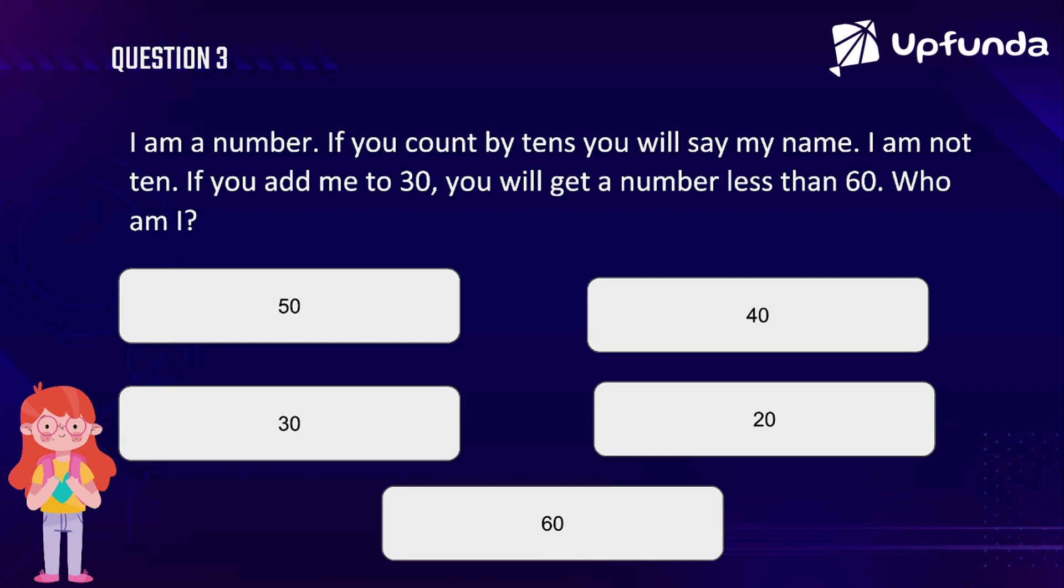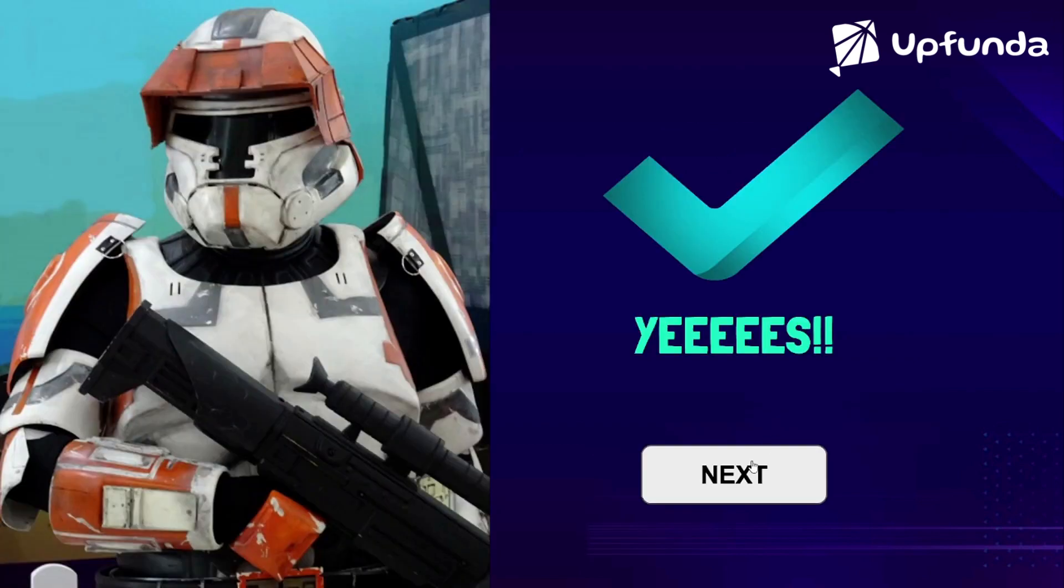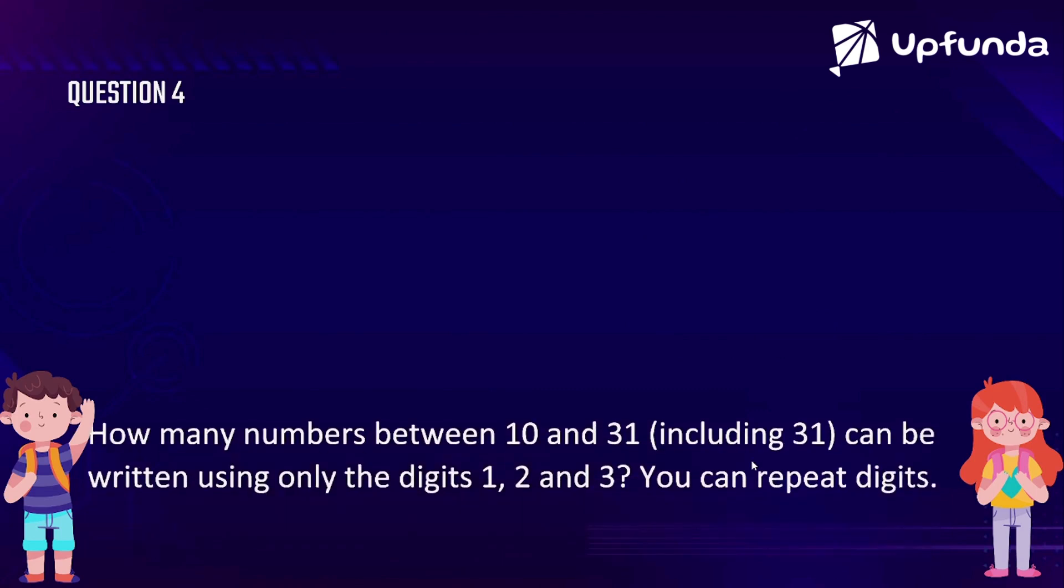Let's add 30 to that. If you add me to 30, 20 plus 30 is 50. You will get a number less than 60. So what is 20 plus 30? Yes, you're right, 50. That is a number that's less than 60, so the answer is 20.